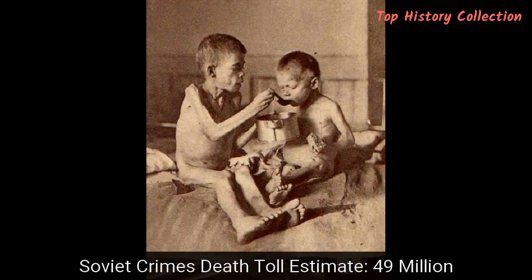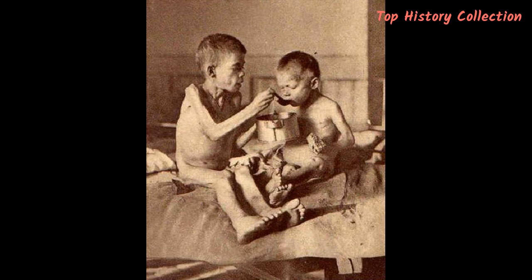Number 5: Soviet Crimes – Death Toll Estimate: 49 Million. Here is another example of a disaster caused by a country with a vast population trying to change its economic and social landscape in a very short period. Under the Soviet Union, from 1917 to 1953, millions of Russians died at the hands of revolution, civil war, famine, forced resettlement, and other crimes.